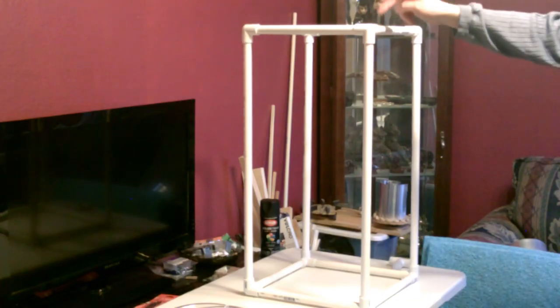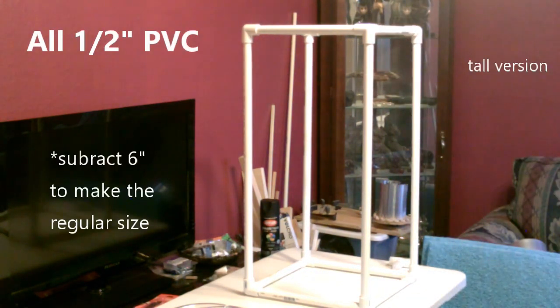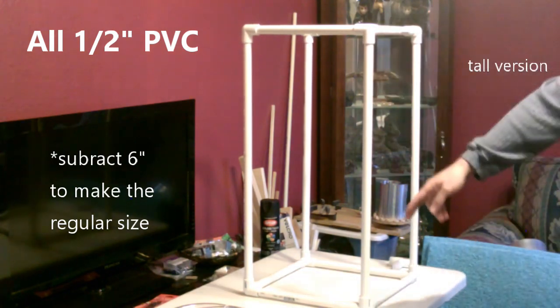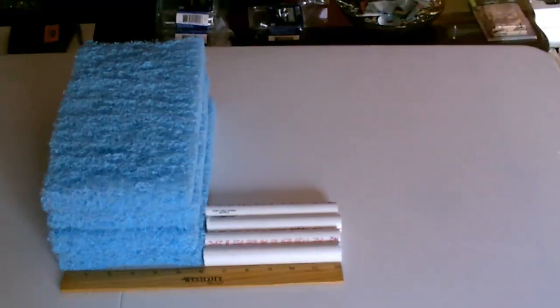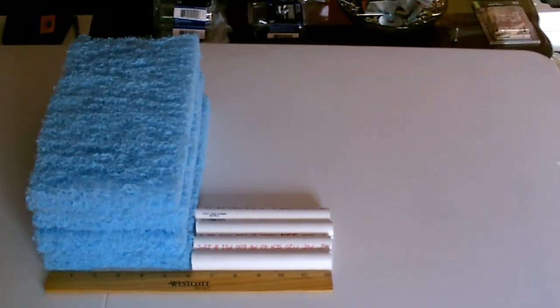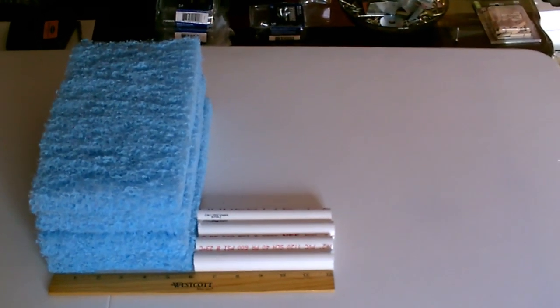It's eight of the three-way couplers, eight 11 and a half inch pieces, and four of the 26 inch pieces. That makes a total cube width of about 14 inches and height of about 28. And again, for the shorter build, take six inches off the pad length and six inches off the vertical posts, so those posts would be 20 inches instead of 26.